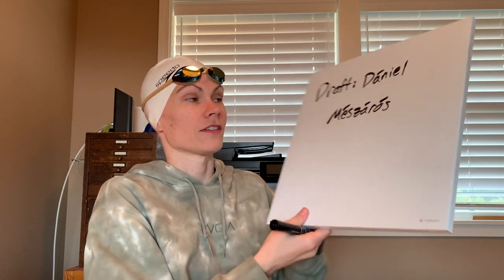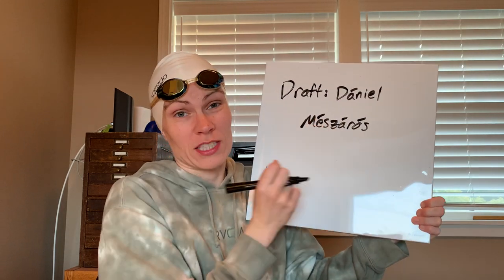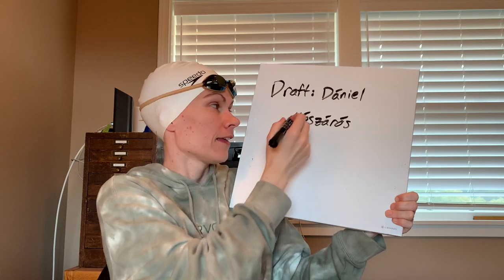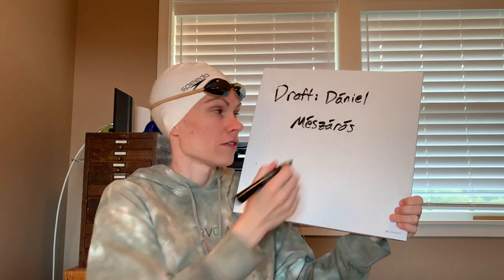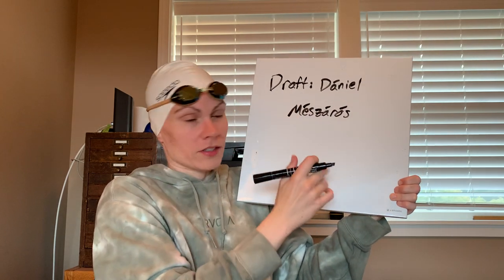Up next, the third plus a bonus is draft Daniel Mesa Rosé — note there are accents on this name that I'm intentionally leaving out here; I'll put the correct spelling in the video description. I don't want to do it semi-right and have people getting on me — there are two accents on this name. Daniel Mesa Rosé is a Hungarian swimmer.